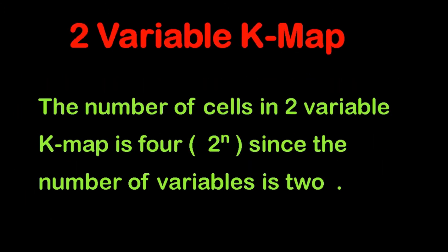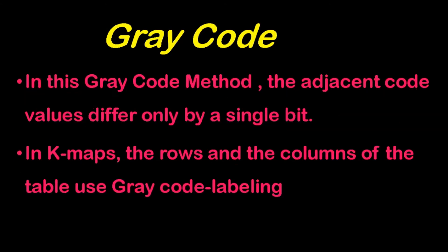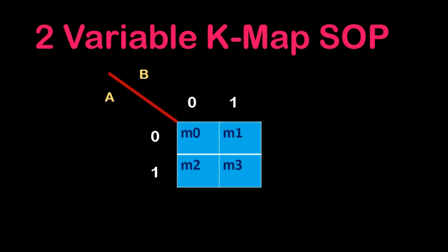So 2 variable K map. The number of cells in 2 variable K map is 4, which is nothing but 2 power 2, since the number of variables is 2. Each cell within the K map has a definite place value which is obtained by using encoding technique called gray code. Gray code is an important method, and using that method only we are going to label the rows and columns. And each and every box should differ at least by 1 bit.